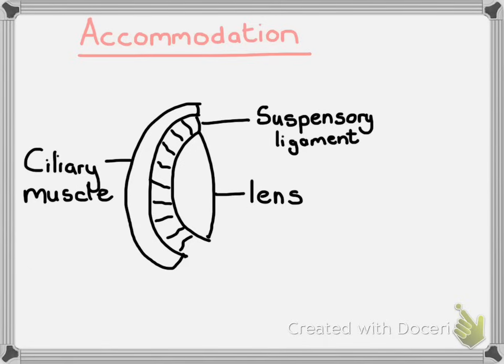There is a similar diagram on page 161 just so that you can orientate yourself with these three structures, because when you explain how accommodation works you are going to have to explain what is happening to each one of them. In particular, the suspensory ligament and the ciliary muscle are antagonistic — when one is contracting, the other one is relaxing.